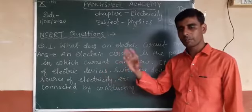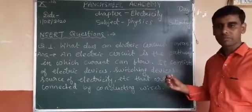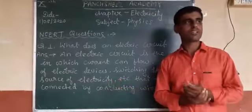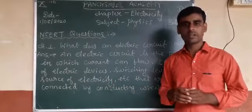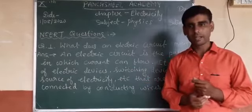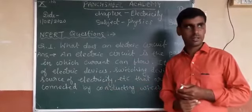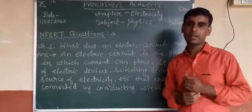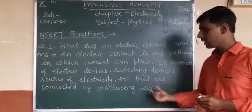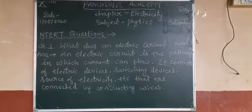Electric devices means fan, bulb, electric press, etc. Switching devices means key or switch to open or close the circuit. Source of electricity means for a small circuit we can use a cell, and for a large circuit we can use batteries, including in household circuits. These are connected by conducting wires.